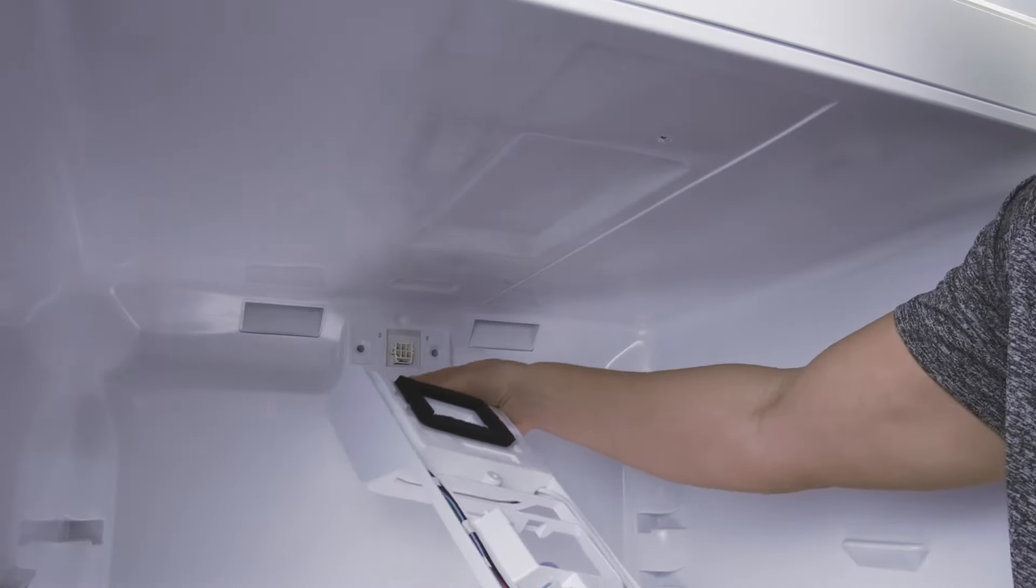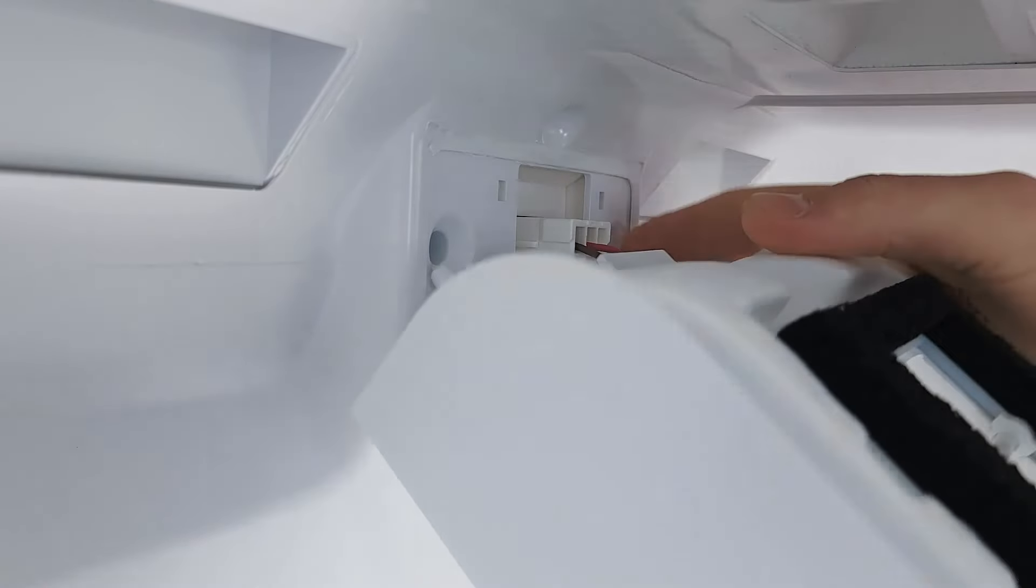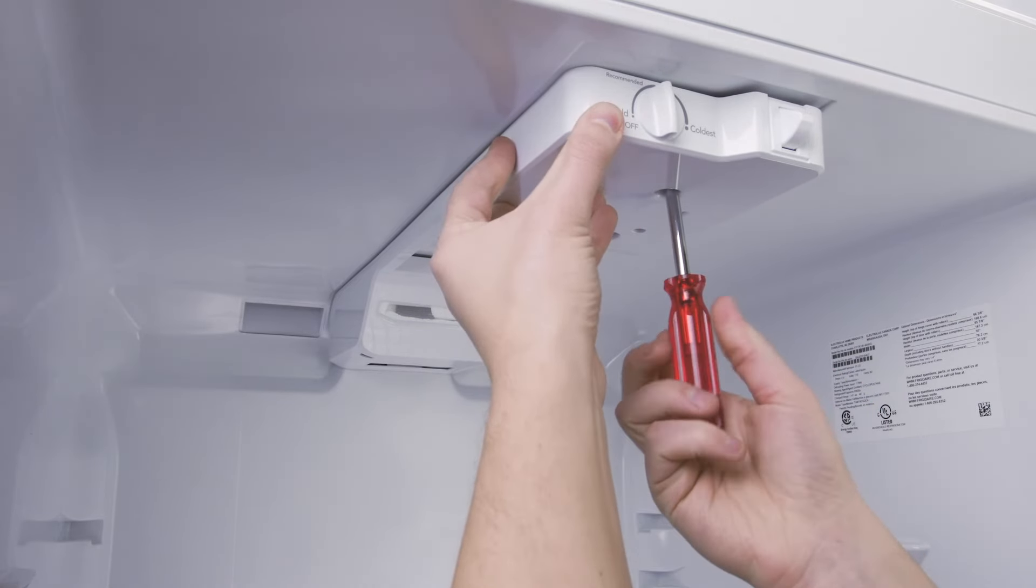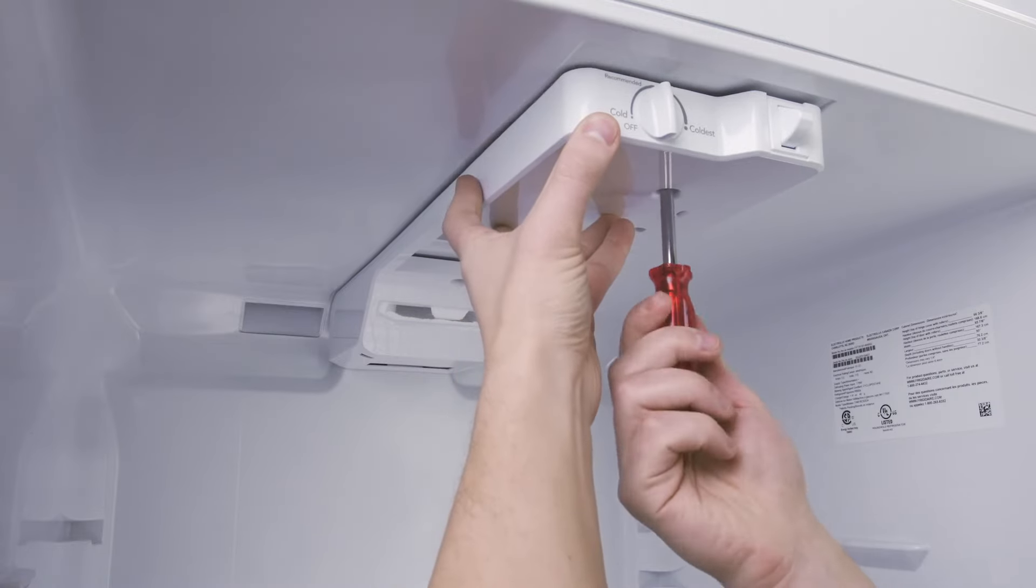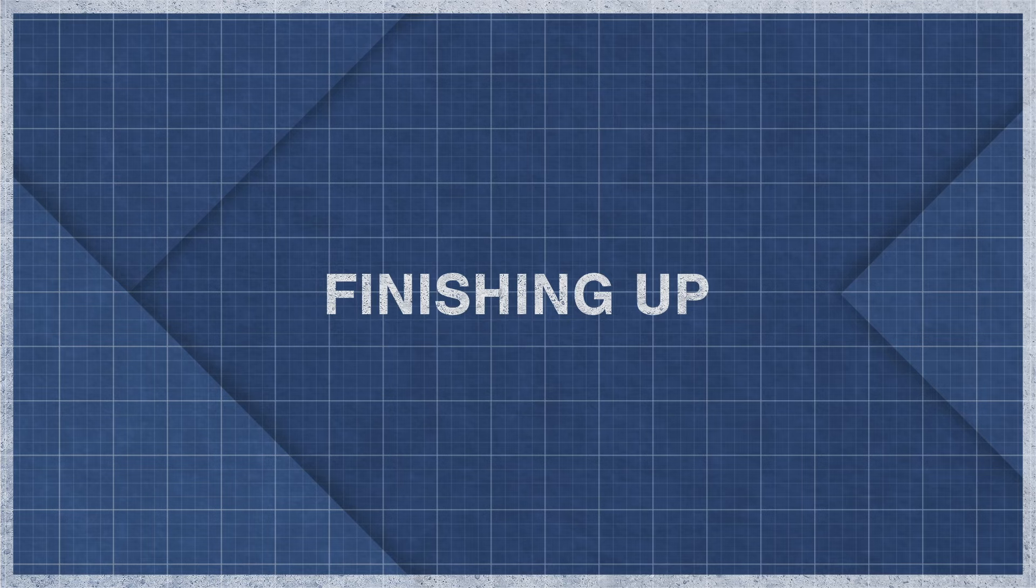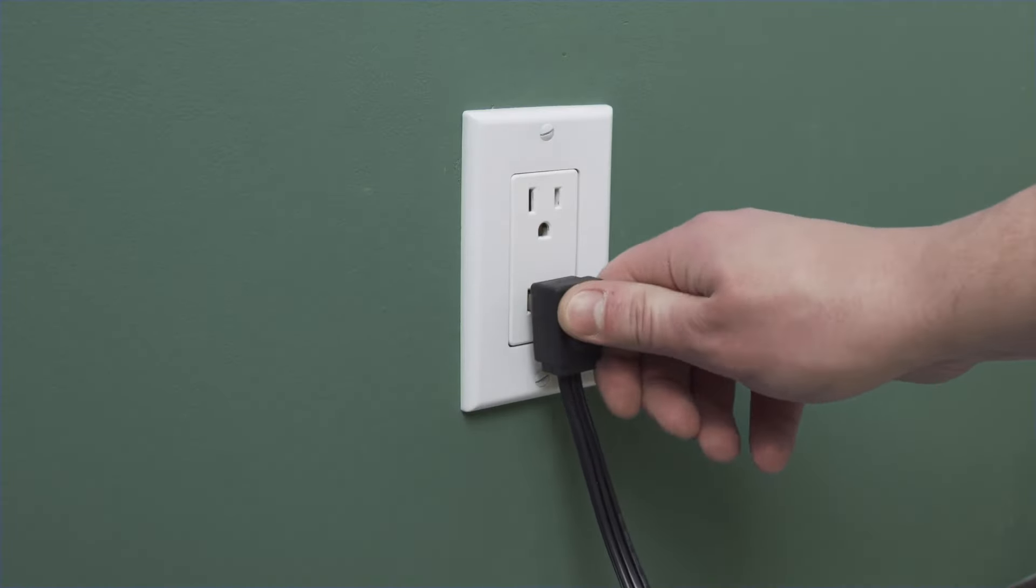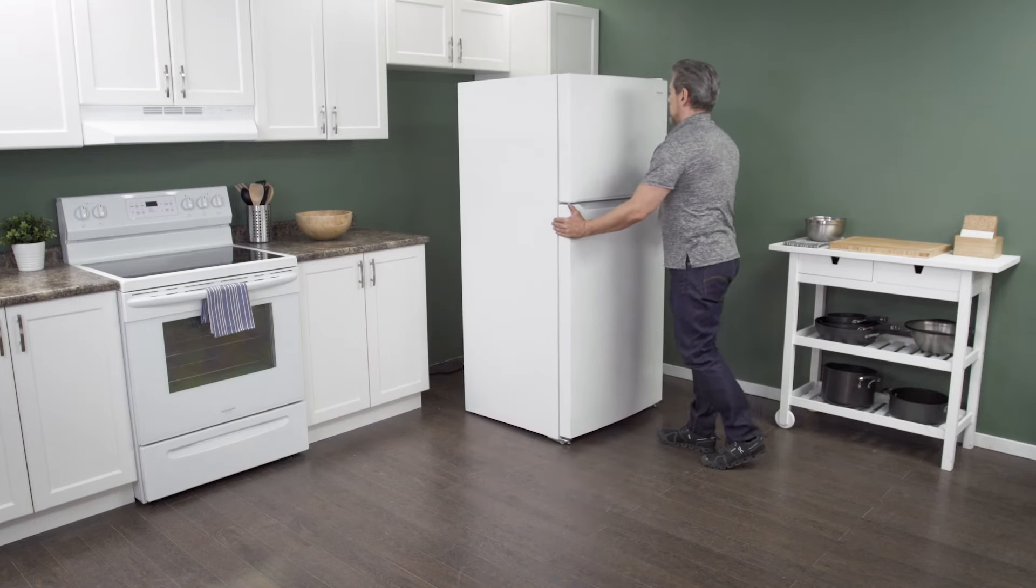Align the control housing and reconnect the wire harness. Now tighten the mounting screws. Plug in the cord to reconnect the power. Now slide it back into place.